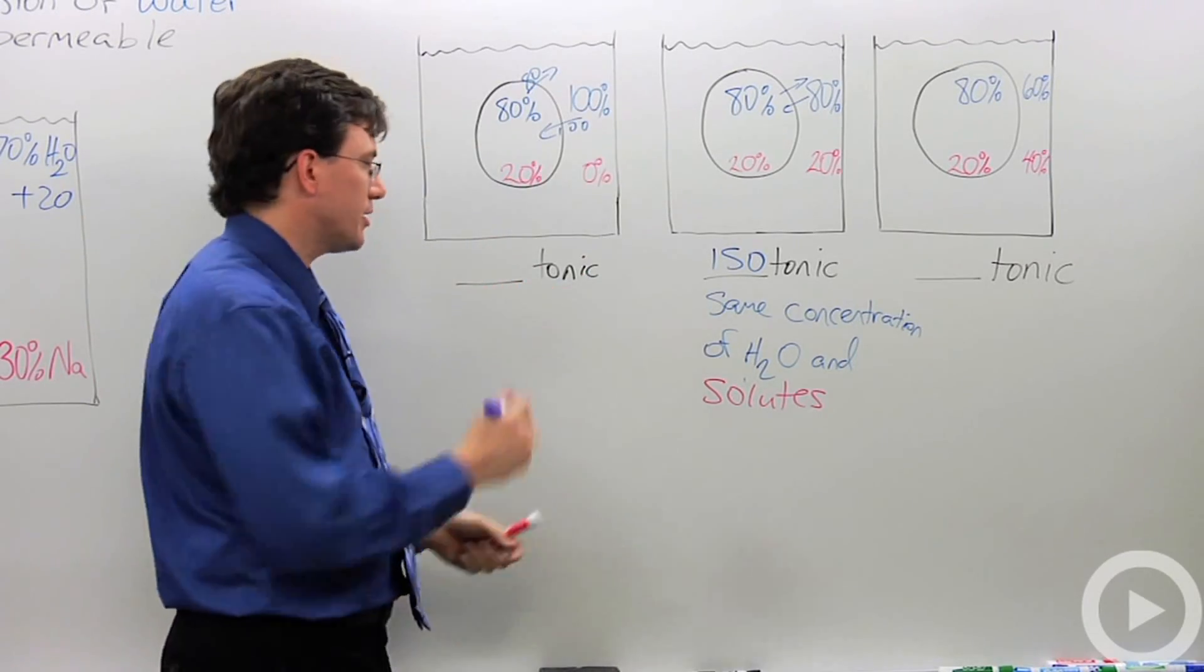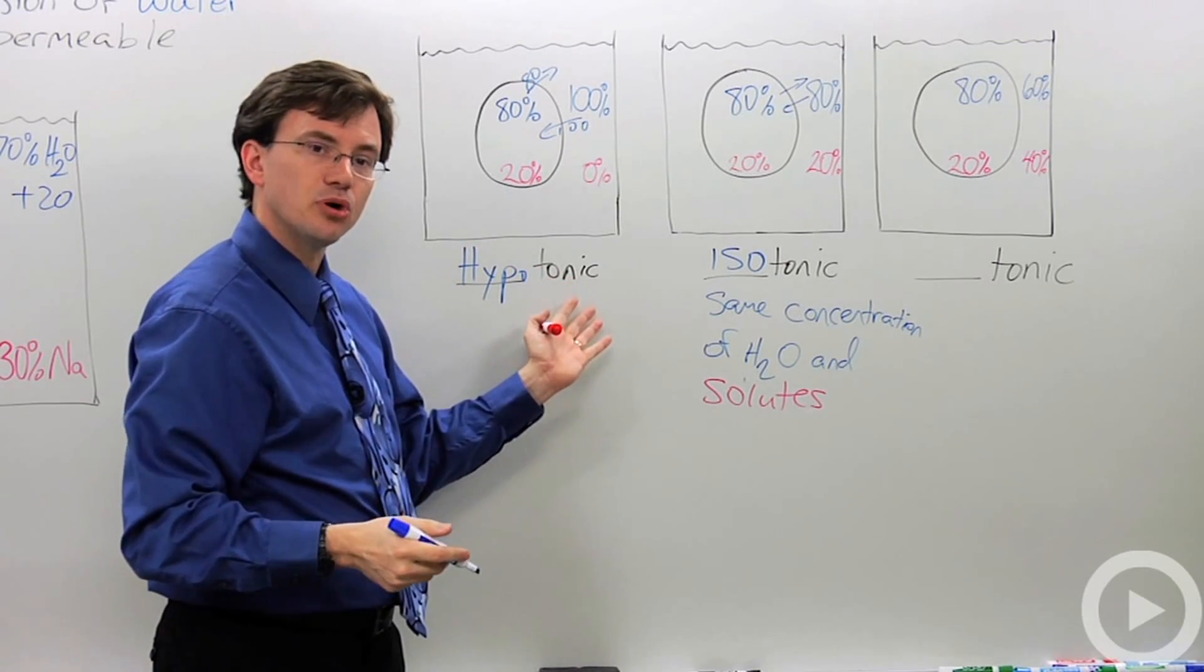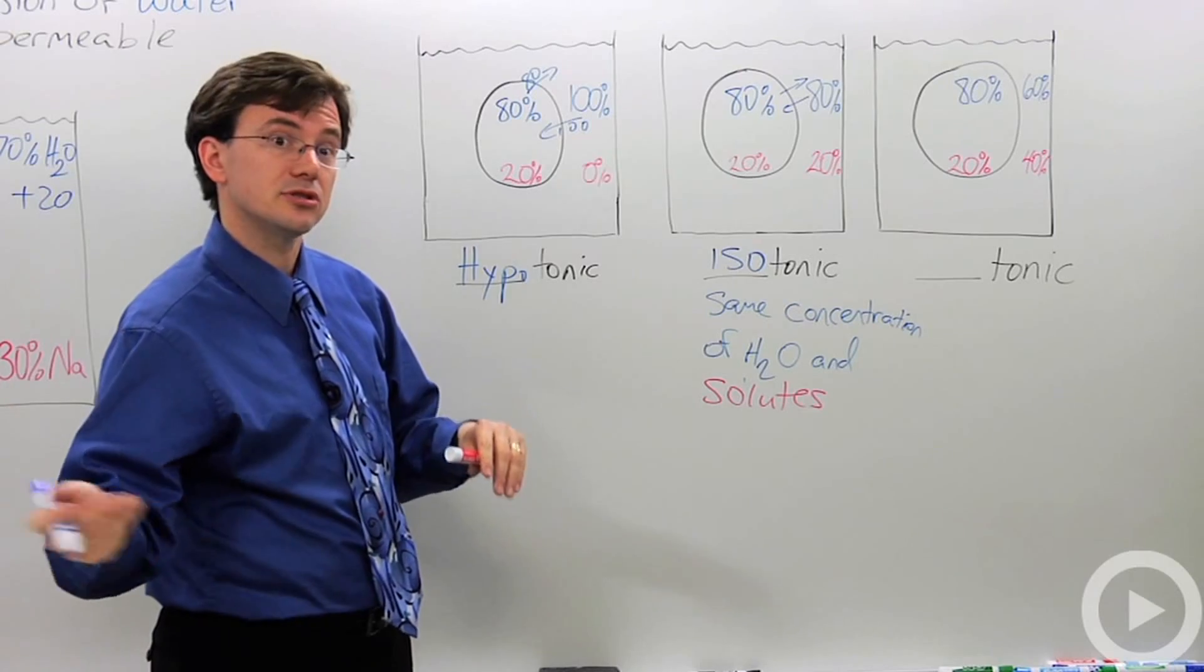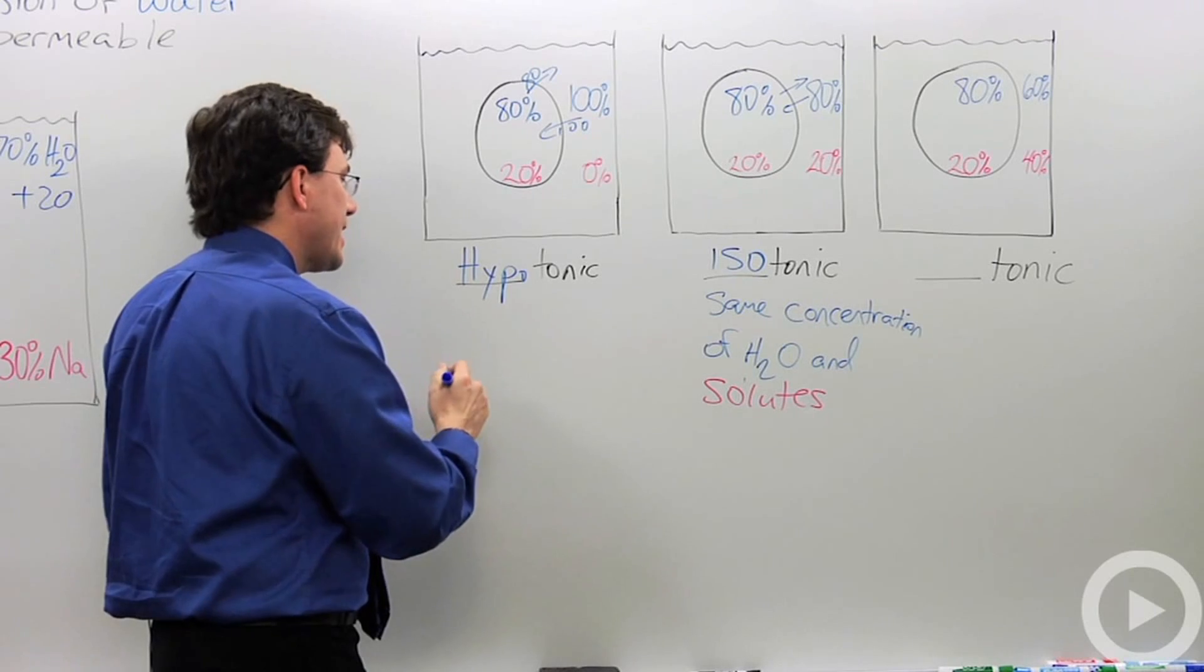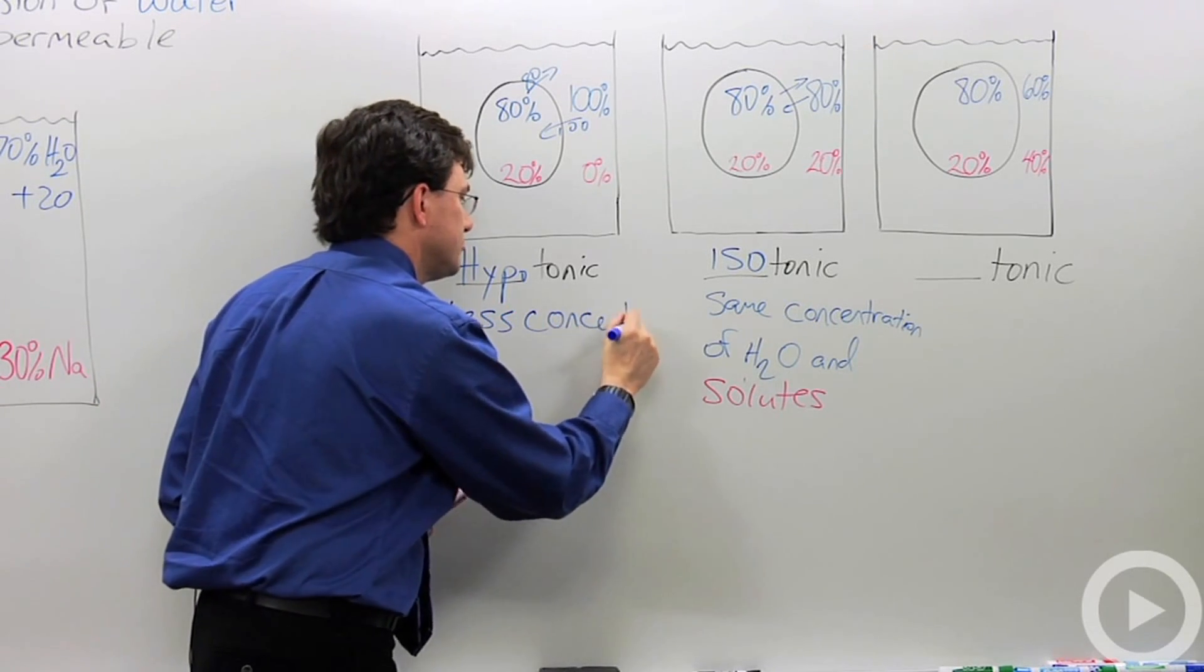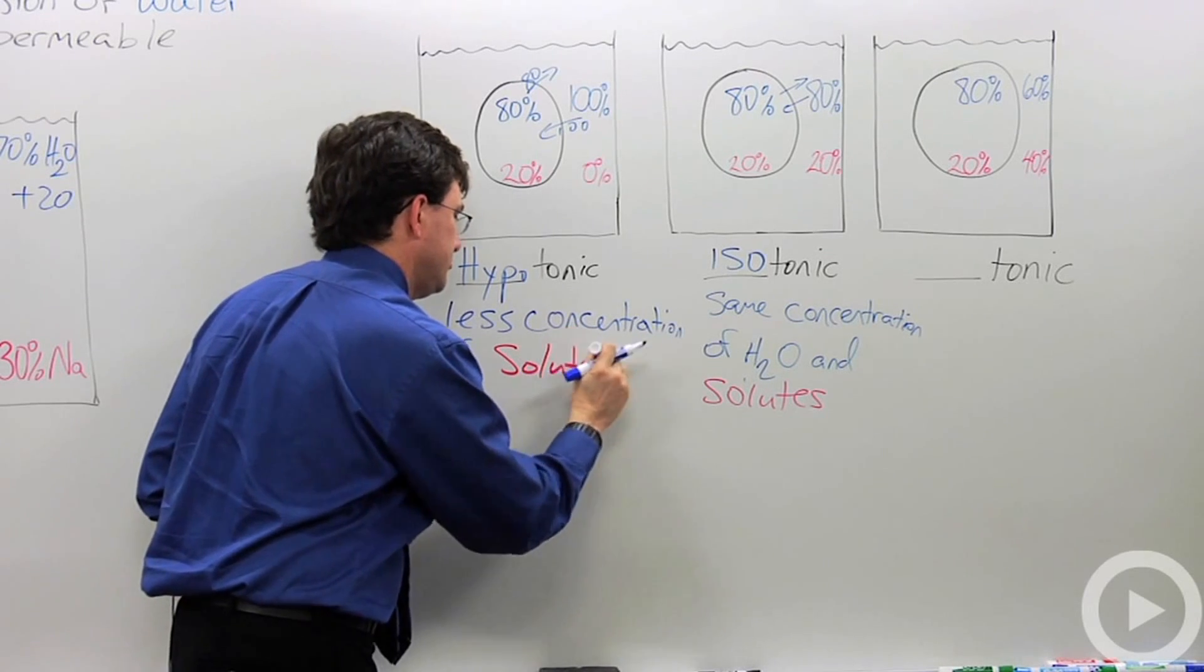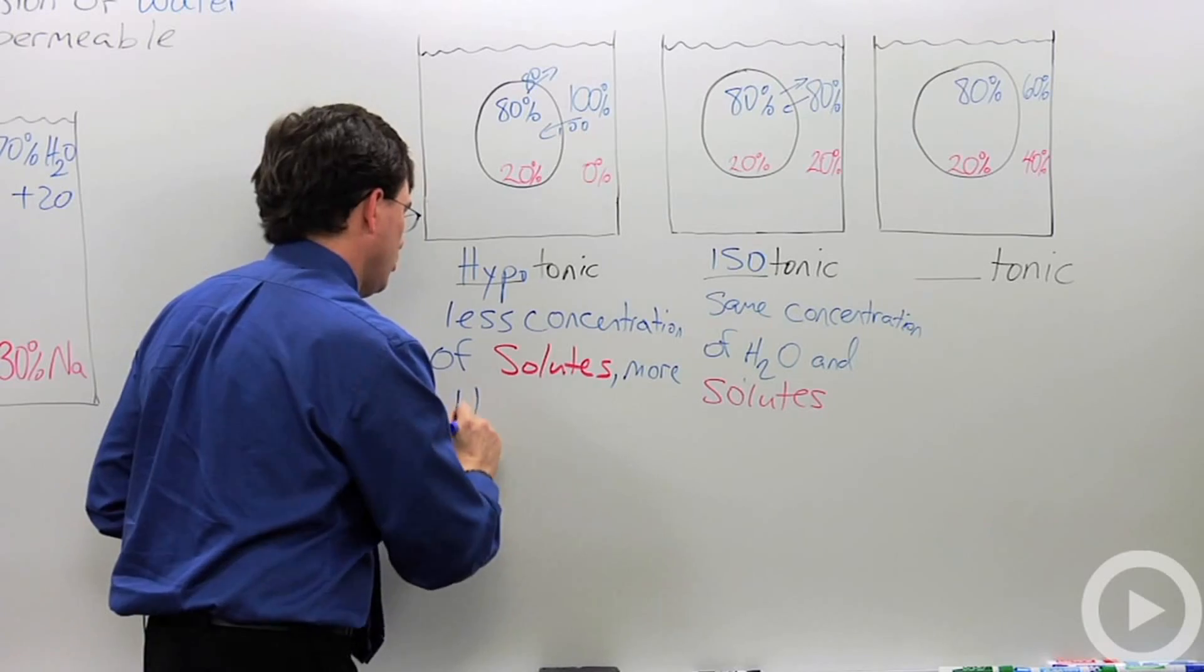It's called hypotonic. Hypotonic because it has lower than the normal amount of pull compared to the cell. It's always in comparison. It's kind of like saying taller. Somebody can be taller or shorter than someone else.